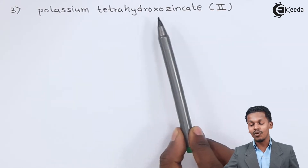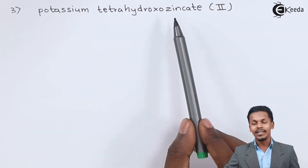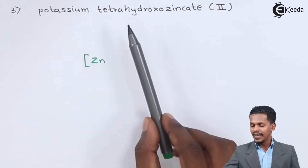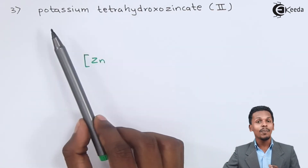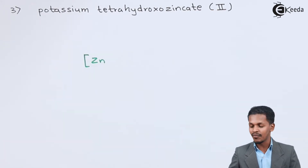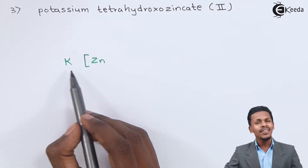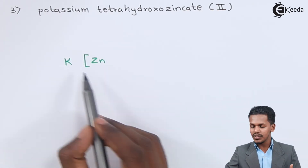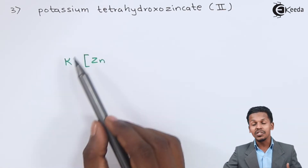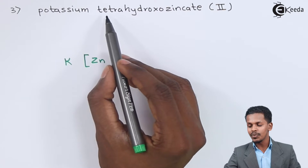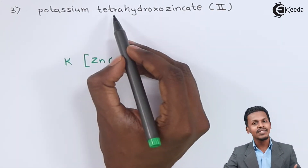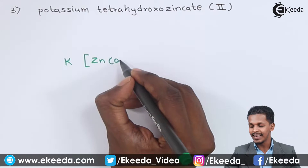The next example is potassium tetrahydroxozincate. The central metal atom is zinc. The ligand is hydroxo (OH), not potassium — potassium is a cation in the primary entity. We write K for potassium and the complex as [Zn(OH)₄]. Hydroxyl is a negatively charged ligand. There are 4 hydroxyl ligands, so we write Zn(OH)₄ inside the square bracket.